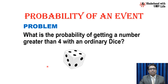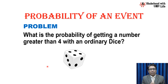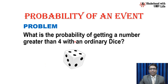We are learning the calculation of probability of an event. We are solving the problems based on probability — specifically, the probability of an event. Here we have the problem: what is the probability of getting a number greater than 4 with an ordinary dice?